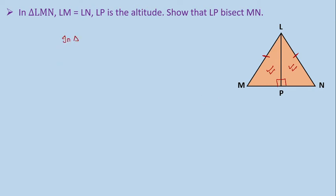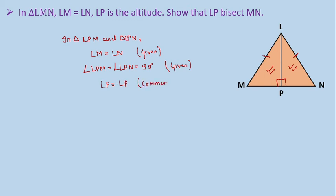So, let's write that in triangle LPN, we have LM is equals to LN which is given, and angle LPM is equals to angle LPN which is equals to 90 degrees as LP is the altitude and it is also given in this question. And we have LP is equal to LP, and side LP is common in both triangles.